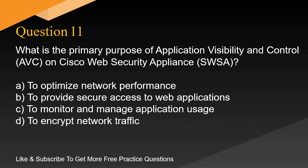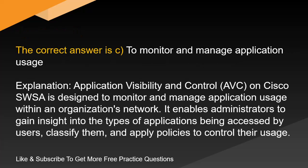Question 11. What is the primary purpose of Application Visibility and Control (AVC) on Cisco Web Security Appliance (SWSA)? A. To optimize network performance. B. To provide secure access to web applications. C. To monitor and manage application usage. D. To encrypt network traffic. The correct answer is C. To monitor and manage application usage. Explanation. Application Visibility and Control (AVC) on Cisco SWSA is designed to monitor and manage application usage within an organization's network. It enables administrators to gain insight into the types of applications being accessed by users, classify them, and apply policies to control their usage.